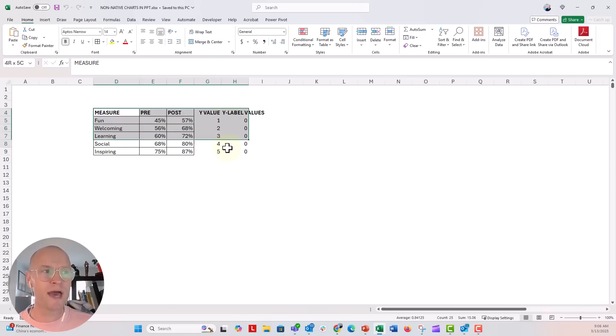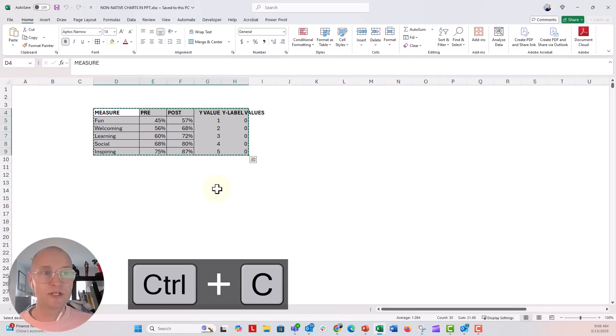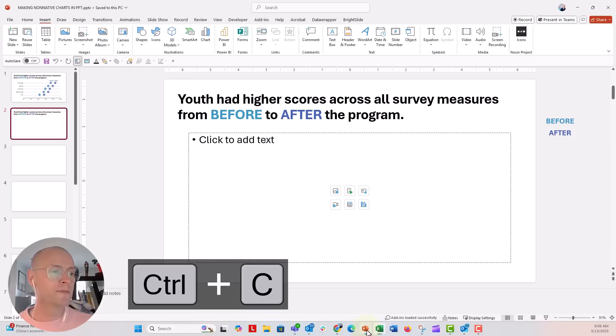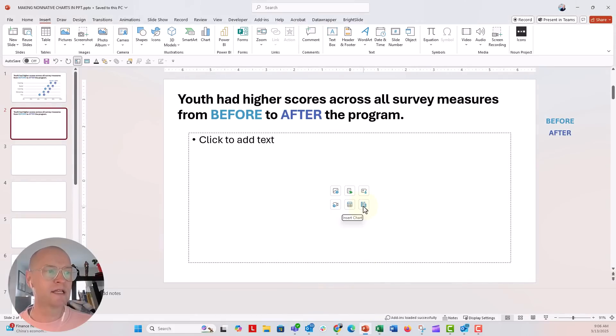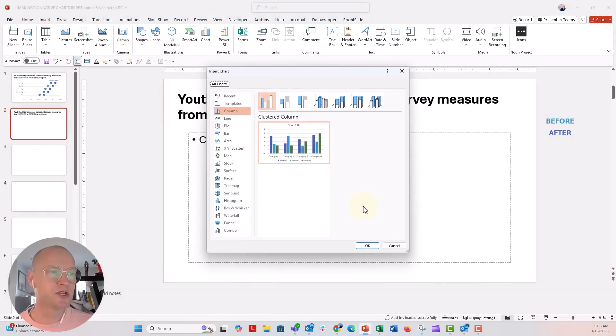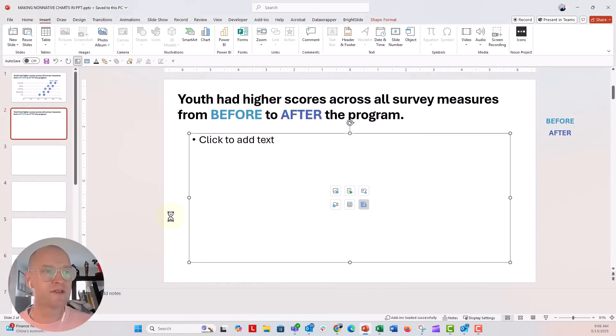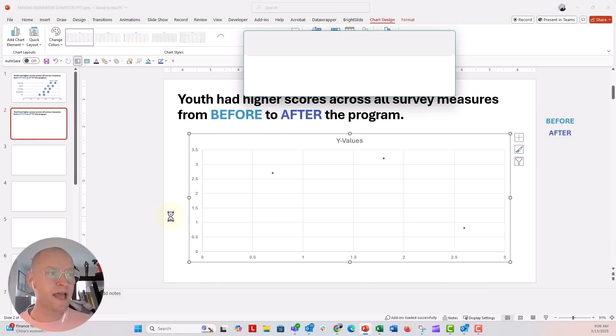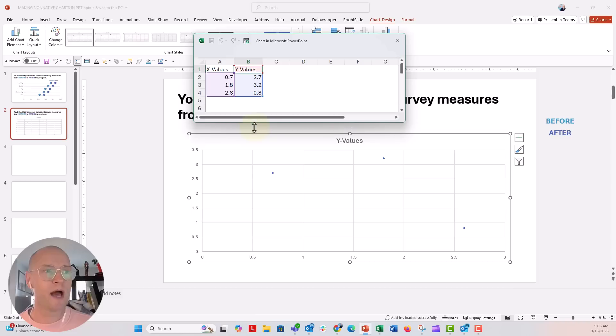I'm going to copy all of these data with Control C. Over in PowerPoint, from my placeholder, I'm going to click on the chart. You could also do this from the insert menu. I'm going to go down to XY scatter, click OK, and in comes the stock XY scatter plot right into my slide.